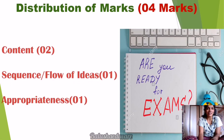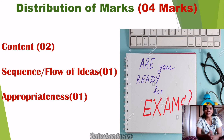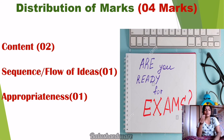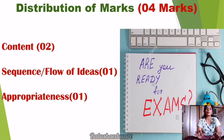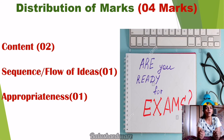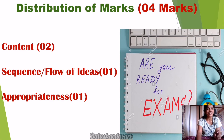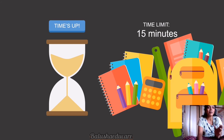Avoid ambiguity — no double-meaning words. This question is for four marks: content two marks, sequence/flow of ideas one mark, appropriateness one mark. You can easily get four out of four marks here. Also, in the English paper, this question doesn't take long — spend maximum 13 to 15 minutes on it, since it is typically a short answer.